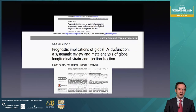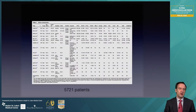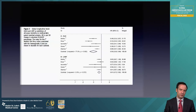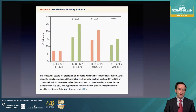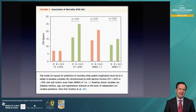He comes back a few years later, not with 546 patients but with 5,721 patients. The hazard ratios clearly show that global longitudinal strain functions better than ejection fraction in terms of prognosticating mortality in this population. When patients are separated by ejection fraction above or below 35%, global longitudinal strain provides the most value exactly in the population where ejection fraction does not function well — those with an ejection fraction north of 35%.